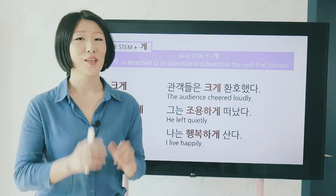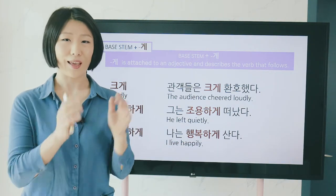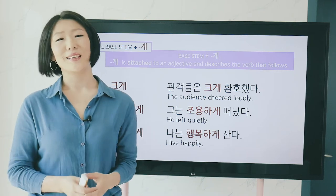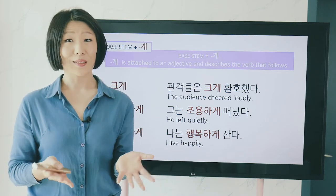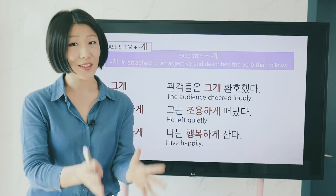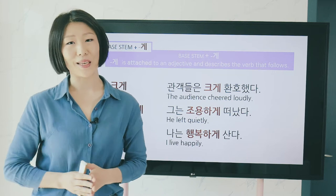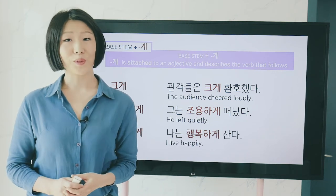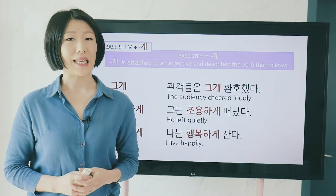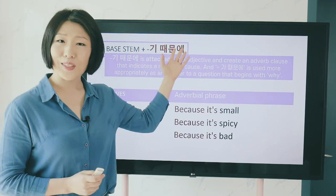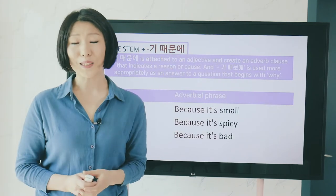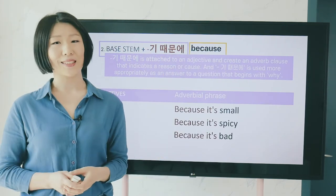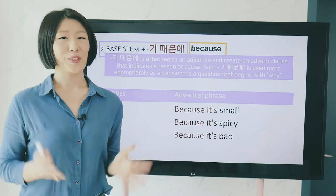Now we are going to learn two ways to make an adverb clause — a group of words that functions the same as an adverb. The first of the two is 기 때문에, which corresponds to 'because' in English.